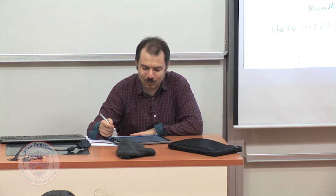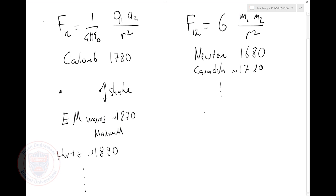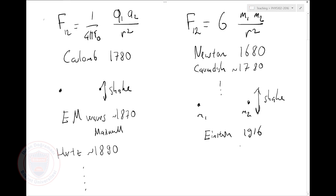Now there's a parallel story you don't know about. Similarly, if I have two masses M1 and M2, Newton's formula is correct only if they are not accelerated. If I shake M2, I start emitting waves. So Einstein, in 1916, said: just like electromagnetic waves, there are gravitational waves.